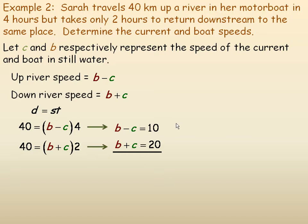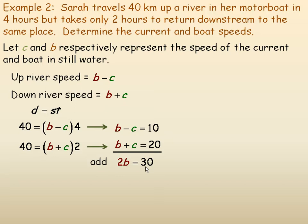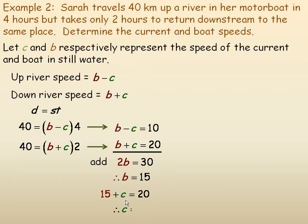It would be easy to solve this by substitution or elimination. I'm going to use elimination. Because the C's are opposites, I'll add the equations to eliminate C. B and B add to 2B, and 10 and 20 add to 30. Dividing both sides by 2, B equals 15, so the boat speed is 15 kilometers per hour. Using the second equation with B equals 15, we get 15 plus C equals 20, so C equals 5 kilometers per hour.